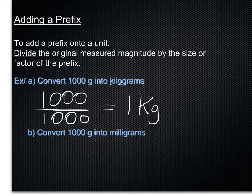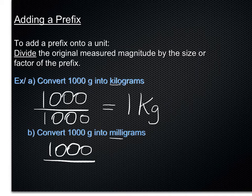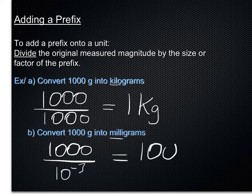Another example, convert 1,000 grams into milligrams. Well, we divide the 1,000 by the factor, or the size of a milli, which is 10 to the power of minus 3. So we can put that down, it's the easiest way to write this. And that means you'd end up with a rather large number of milligrams. No surprise, 1 million milligrams.